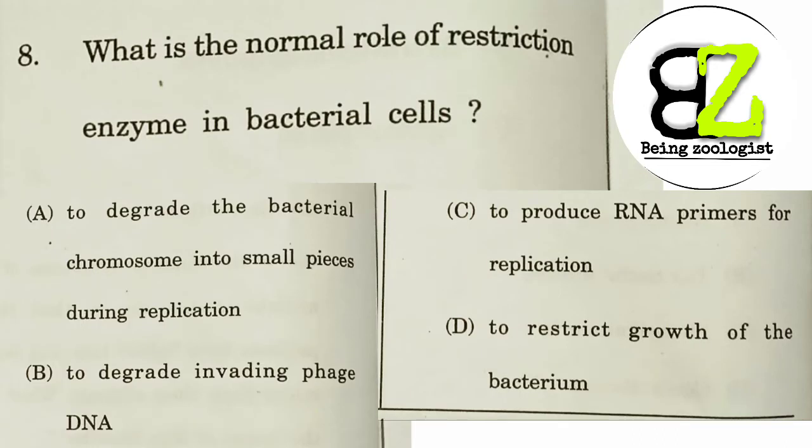Next question: what is the normal role of restriction enzymes in bacterial cells? The answer is option A — to degrade the bacterial chromosome into small pieces during replication. So according to me, the answer should be option A.